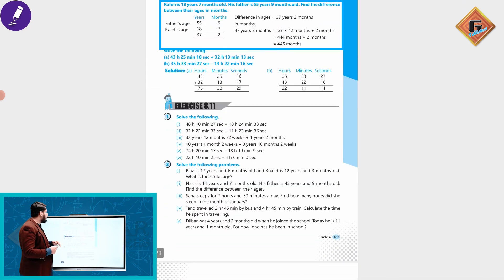Saad is 17 years and 7 months old. His father is 55 years and 9 months old. Find the difference between their ages in months. You see that you have the difference between months and months, so you have to subtract.